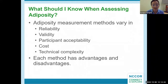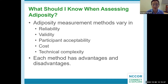What should you know when assessing adiposity? Various measurement methods may be used to assess body composition and specifically adiposity in research and evaluation in clinical and field-based settings. These methods vary in reliability, validity, participant acceptability, cost, and technical complexity. Each method has advantages and disadvantages, and some degree of error that relates to the underlying assumptions in the estimate of body fat, as well as measurement error.